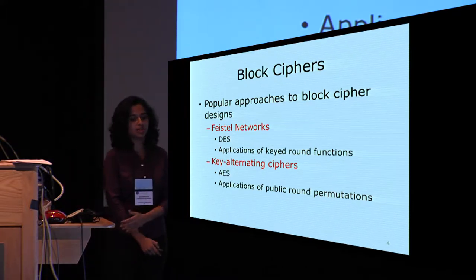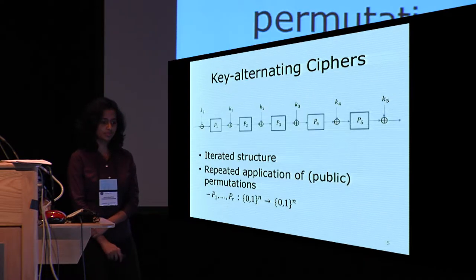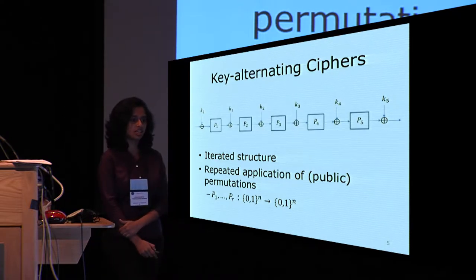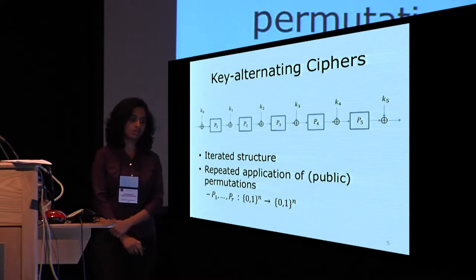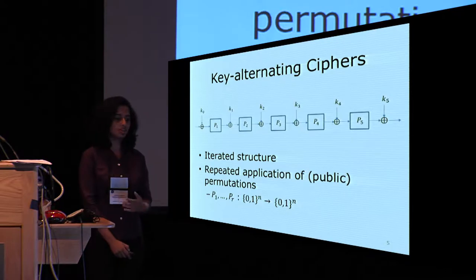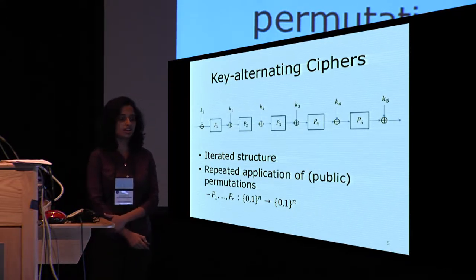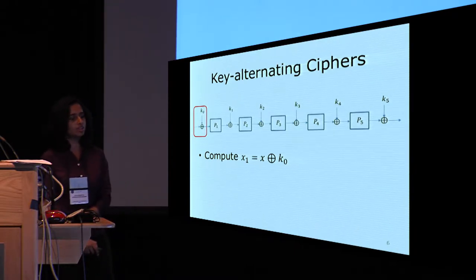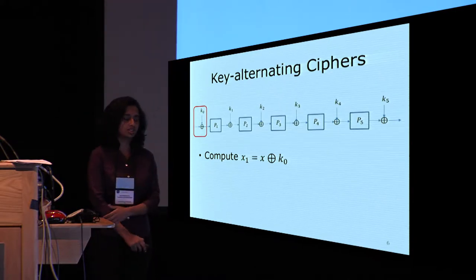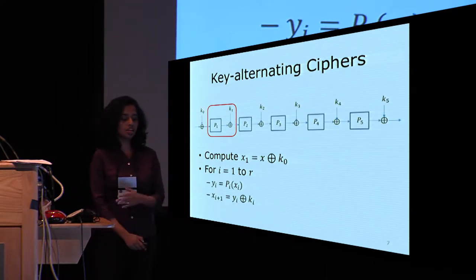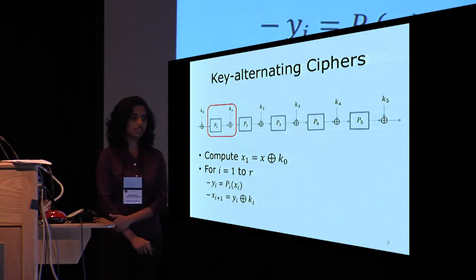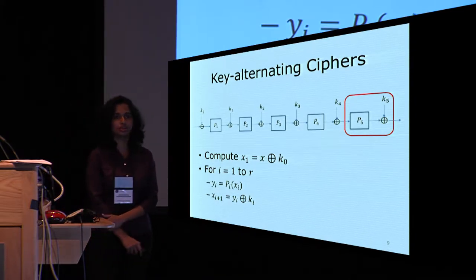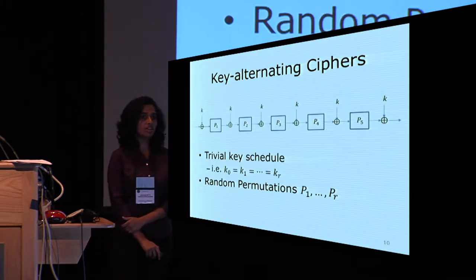Key alternating ciphers consist of repeated applications of public round permutations. Consider this five-round key alternating cipher: it is an iterated structure that takes in a master key k, from which we derive round keys k0 through k5. On an input x, we XOR each round key in a particular round and then apply a round permutation that takes an n-bit input and produces an n-bit output. Specifically, compute x1 as x XOR k0, then x2 as p1(x1) XOR k1, and so on through round five, yielding output x6.